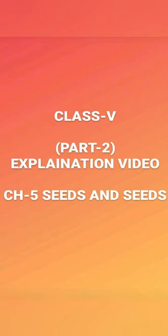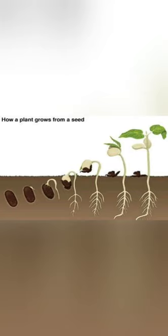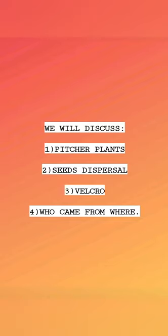Hello children, how are you? I hope you are doing well and enjoying this chapter. Let's continue our ongoing chapter, Seeds and Seeds of your book, Looking Around. In our previous video or part 1, we discussed: what is a seed, what is a baby plant, what is a baby root, what are cotyledons, and how seed germination takes place. In this video, we will discuss pitcher plants, seed dispersal, velcro and where it came from. Let's start.